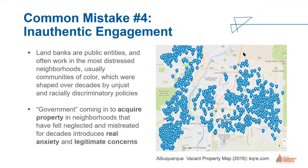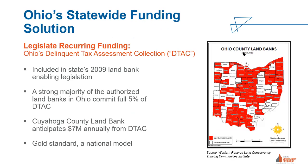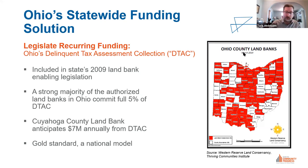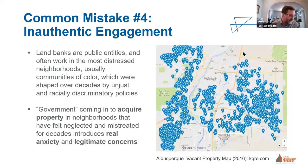There was a clarifying question about Ohio land banks. The Western Reserve Land Conservancy has a program called the Thriving Communities Institute, which is basically the hub of a lot of the land bank activity. They have a running list of all the land banks and a land bank playbook. Ohio also has a land bank association — if you Google 'Ohio land bank association,' you can get their website and additional resources.